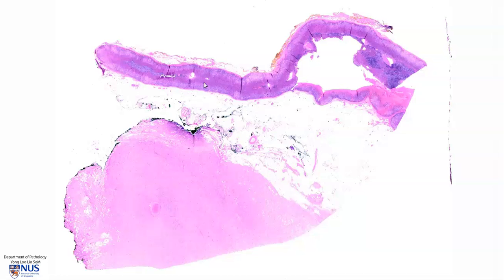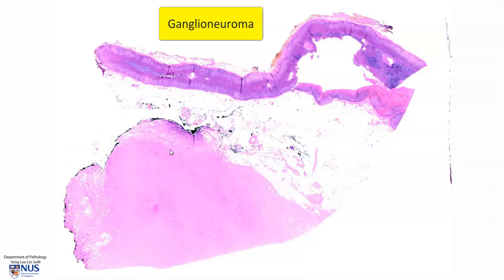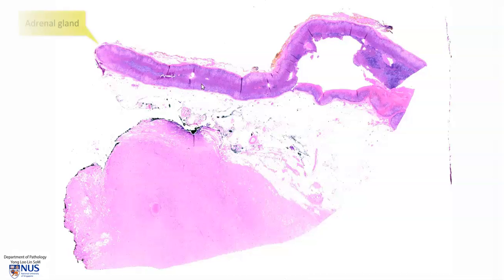This is a virtual microscopy slide from a ganglioneuroma, which is a benign tumor that arises from neural crest cells. This particular tumor is located in the fatty tissue around the adrenal gland.